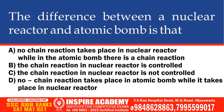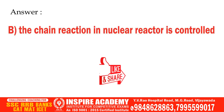The difference between a nuclear reactor and an atomic bomb is that: no chain reaction takes place in nuclear reactor while in the atomic bomb there is a chain reaction; or the chain reaction in a nuclear reactor is controlled; or the chain reaction in a nuclear reactor is not controlled. And the correct answer is: the chain reaction in a nuclear reactor is controlled.